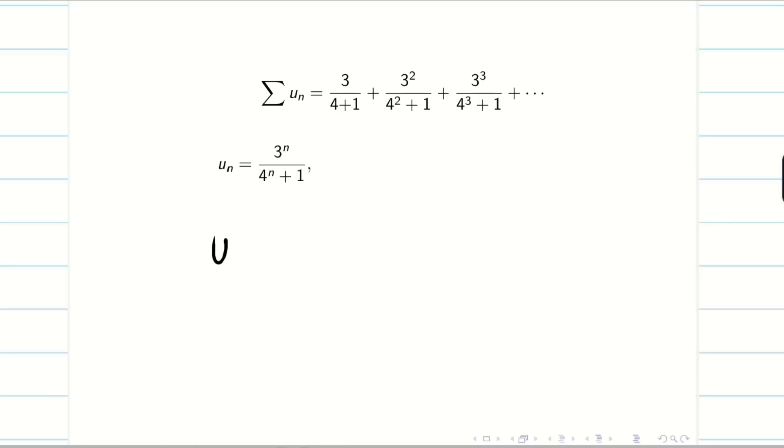For the ratio test, we have to find un plus 1. Just replace n by n plus 1. Now I am going to divide this. For this, I have to simplify the problem. So 3 power n plus 1 can be written as 3 power n times 3 because the base is same. Here also similarly, 4 power n times 4 plus 1. I can write my un plus 1 like this. Now un plus 1 divided by un, I can easily just write as it is and write the reciprocal of this.